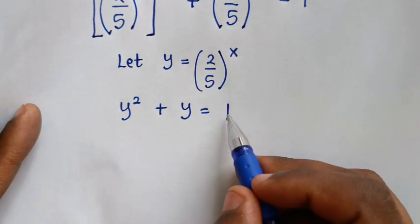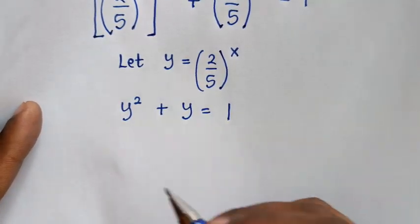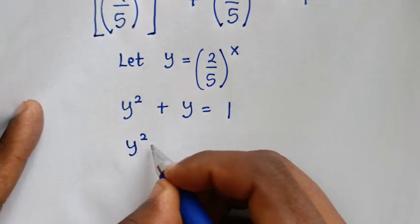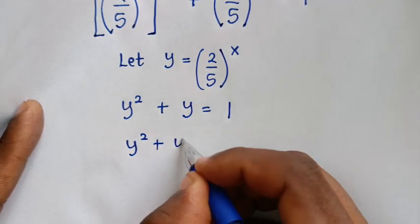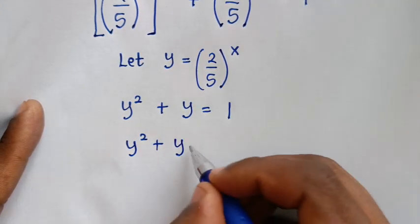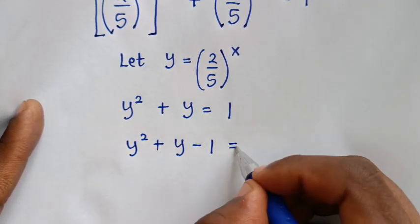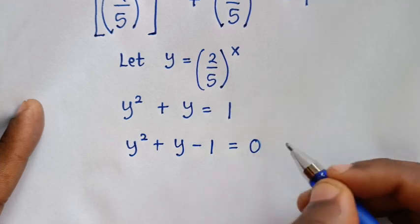We move 1 to the left side, giving y² plus y minus 1 equals 0.